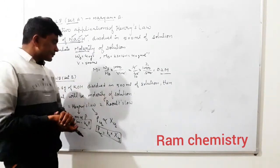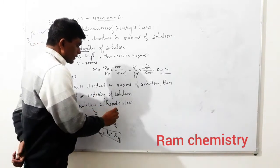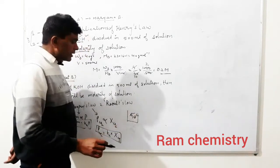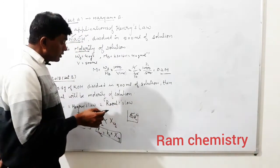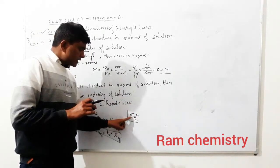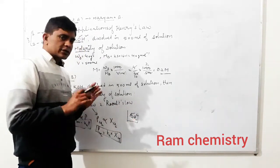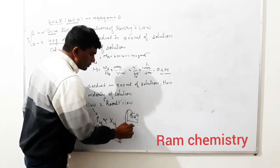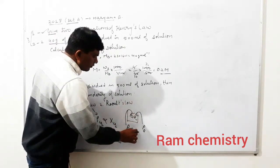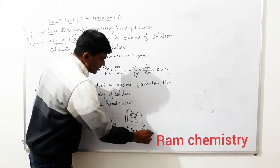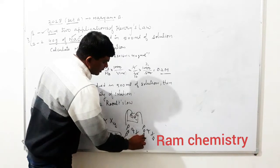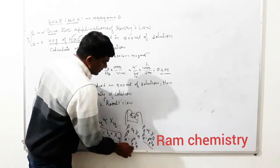Raoult's Law kya hota hai? Maal lijiye mere paas koi bhi liquid hai jismein A aur B do components hain — suppose dono volatile hain, water aur ethanol. Toh partial pressure of a component is directly proportional to mole fraction of that component. So PA = P°A × XA, and PB = P°B × XB. Yeh hamare paas Raoult's Law hai.